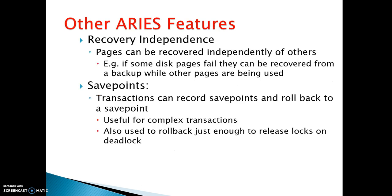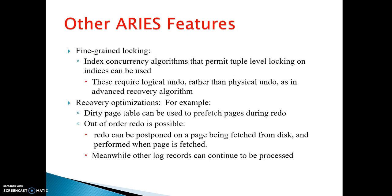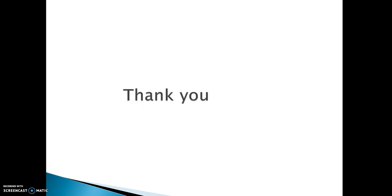Features of ARIES include: recovery happening independently — pages can be recovered independently of others. Save points are an important feature; a transaction can record save points and roll back to a save point, which is useful for complex transactions. Save points are also used to roll back just enough to release locks in a deadlock. Other features include fine-grained locking and recovery optimizations. This presentation has covered the ARIES recovery algorithm, its different phases. Thank you for listening.